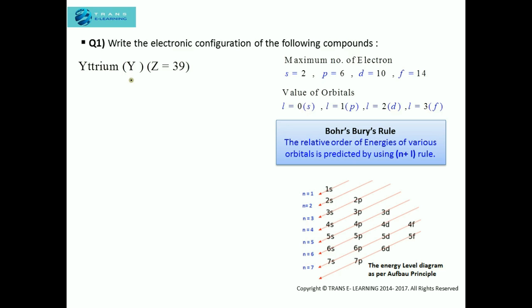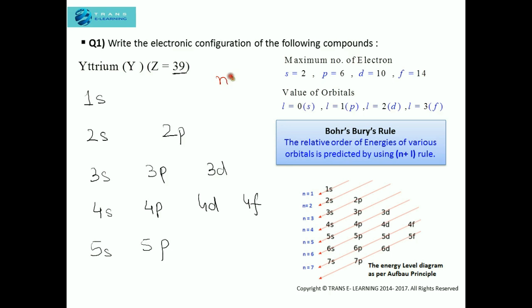Let's consider one more example: yttrium with atomic number 39. First, write the principal quantum numbers and orbitals, then follow the n plus l rule. n+l: 1s=1, 2s=2, 2p=3, 3s=3 — fill 2p first (lower n), giving 2s:2, 2p:6, 3s:2. Then 3p: n+l=4, 4s: n+l=4 — fill 3p first; 3p:6, 4s:2. Next, 3d: n+l=5, 4p: n+l=5 — fill 3d first; 3d:10. Total so far: 30 electrons.